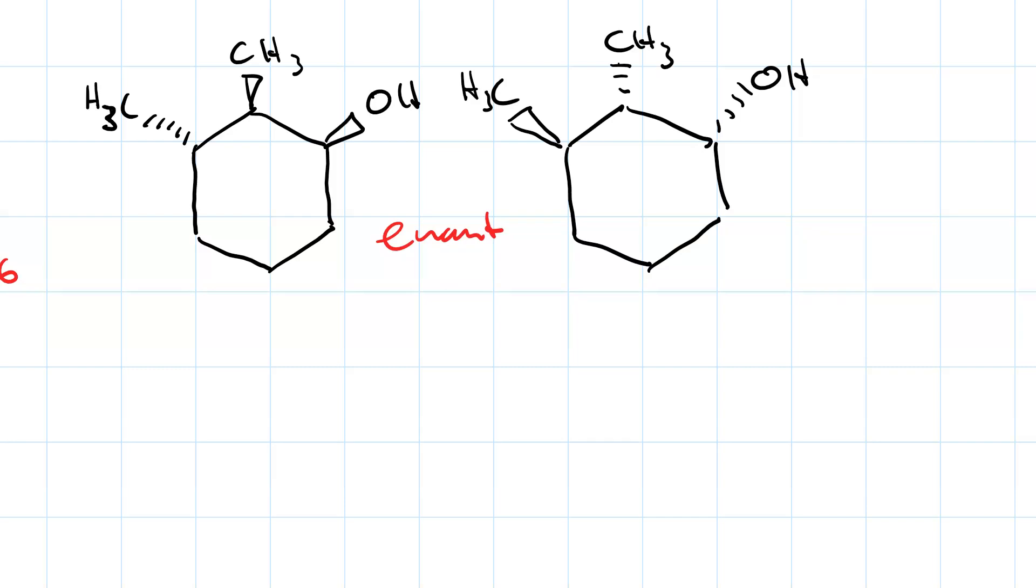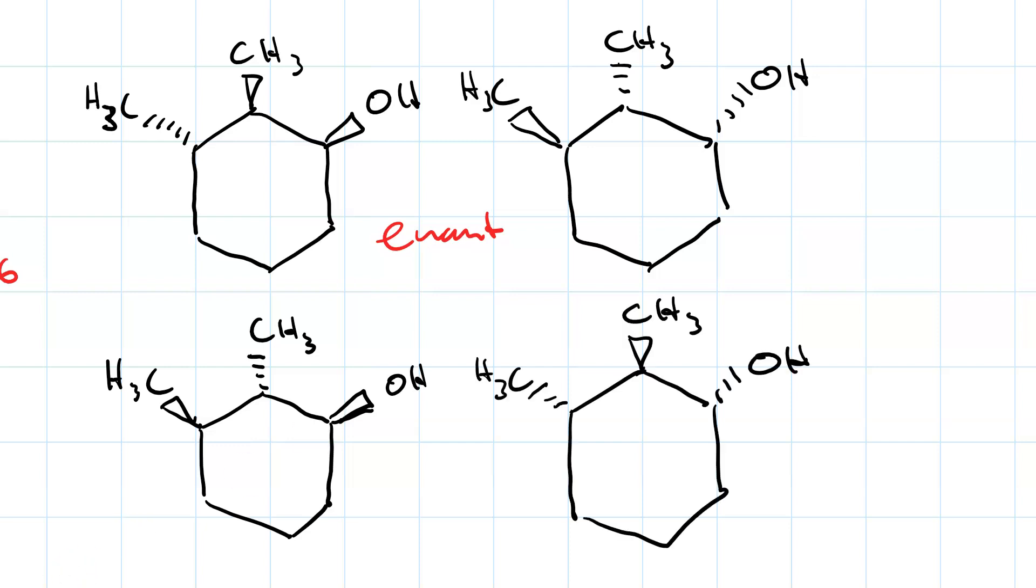Now let's go to the middle chirality center. So now instead of going wedge, wedge, wedge, I've gone wedge dash wedge. The enantiomer of this one will be dash wedge dash. And there it is.